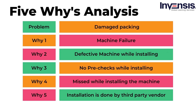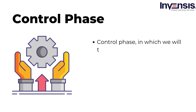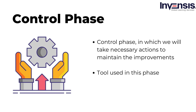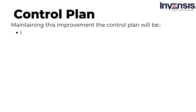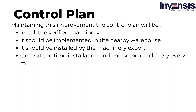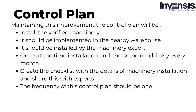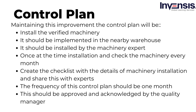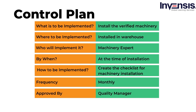After changing the machine, the packing issue is resolved. To control this improvement, we use the control plan. In the control phase, we take necessary actions to maintain improvements. The control plan is: install verified machinery in the nearby warehouse, the machinery expert should install it, check the machinery every month, create a checklist with machinery installation details and share with experts, with a frequency of one month. This should be approved and acknowledged by the quality manager. Thus, the control plan maintains the improvement, reducing packing time and increasing the deliverable package rate.